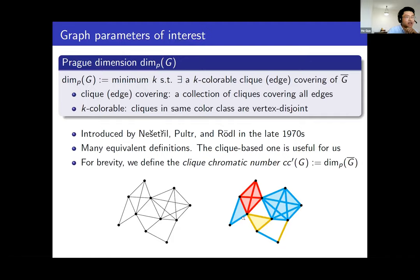Another way to see the relation to the coloring problem: you can build this collection of cliques as a hypergraph, where the vertex set of the hypergraph is the vertex set of the original graph, and a hyperedge corresponds to the vertex set of a clique. For example, this clique corresponds to a 4-edge and this clique to a 3-edge. You need to color the hyperedges with different colors so that they are vertex-disjoint. So proc dimension is the minimum k such that there exists a k-colorable clique coloring of the complement graph.